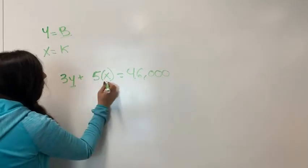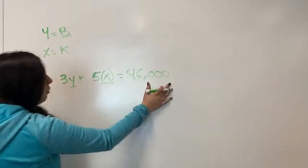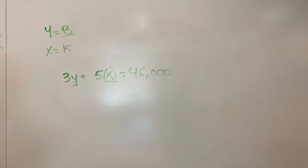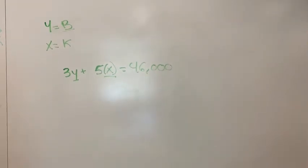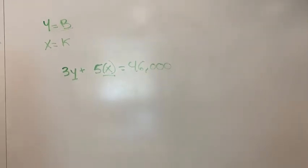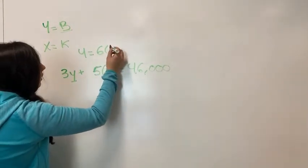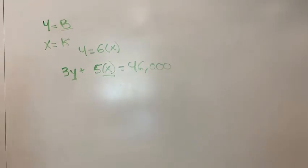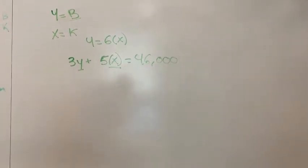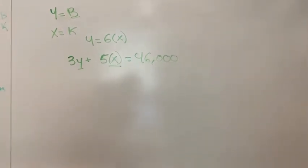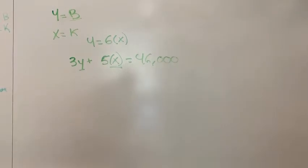So then we can solve for how many of each we need to get this total. And so now we also know that y equals 6 times x because at the beginning of the problem it says that they usually sell 6 times as many baseball racks as they do with the karate belt racks.